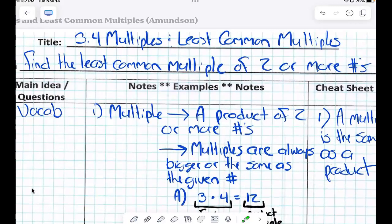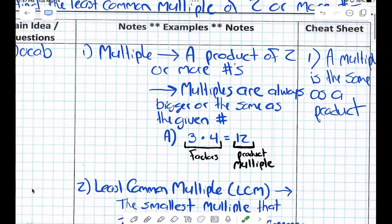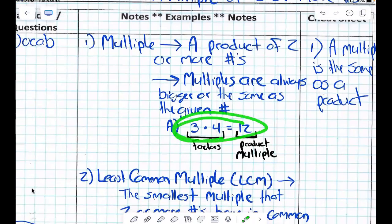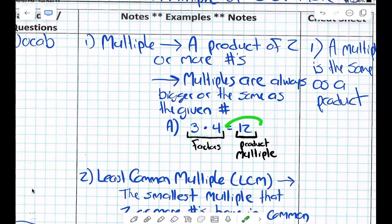OK, a multiple has another name. Another name for a multiple could be a product. Just product, right? Multiple, product, same thing. So this is a multiplication problem, yes? Yeah. What are these numbers called again? Factors. And what is this number called? Product or multiple. Product or multiple, right?